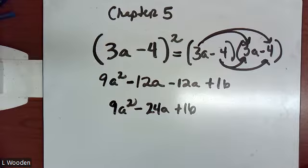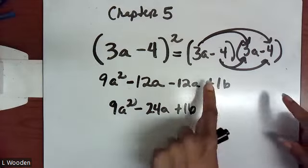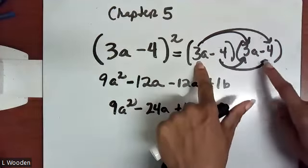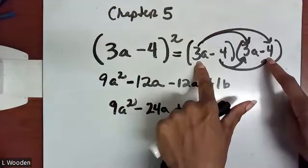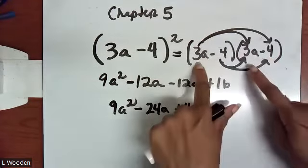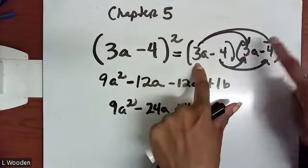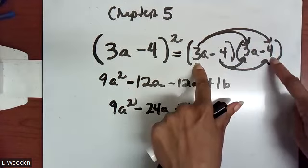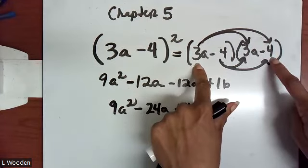A student asks how we got the negative 12a. The answer: 3a times negative 4 gives negative 12a, because everything in the first set of parentheses must multiply to everything in the second set of parentheses.